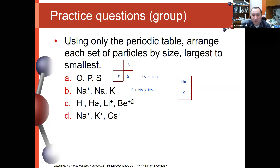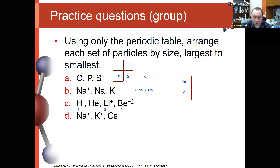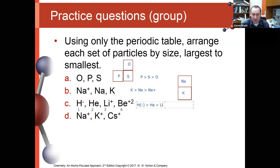For hydride, helium, lithium+, and beryllium2+ — this is an isoelectronic series, so I need to know the number of protons of each. Hydrogen has 1 proton, helium has 2, lithium has 3, beryllium has 4. They go in reverse order of proton count: hydride ion is the biggest because it has the fewest protons pulling on it, followed by helium atom, then lithium+, then beryllium2+.